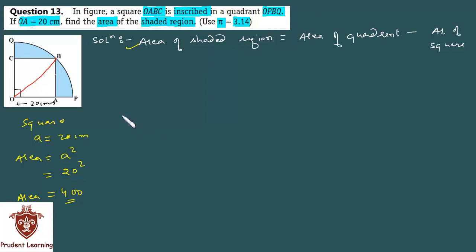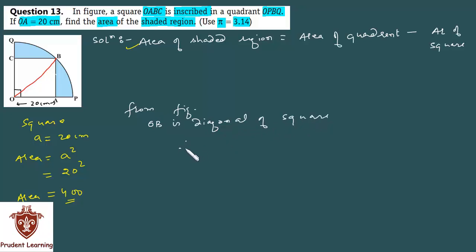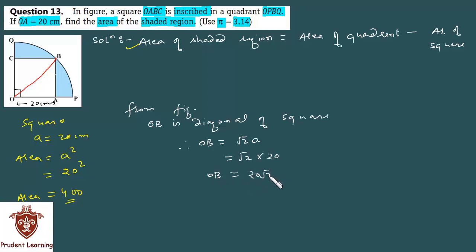From figure, we have OB is diagonal of square. Therefore OB = √2 × a, where a is the side of the square = √2 × 20 cm = 20√2 cm. और यह OB ही sector का radius भी है. Therefore, radius of sector R = 20√2 cm. Sector का angle आपके पास 90 degrees है.